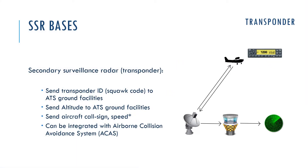How does a transponder work? The transponder is also called a secondary surveillance radar. It is a device placed on board your aircraft that replies to the initial signal from the radar of the ATS ground facilities. It replies with information about the transponder itself — its ID — and depending on the transponder mode, it can give information about the altitude of the aircraft, the aircraft's call sign, and indicated airspeed. The ground facility uses this answer to identify the position of the aircraft as a small dot on the radar, which is very useful.